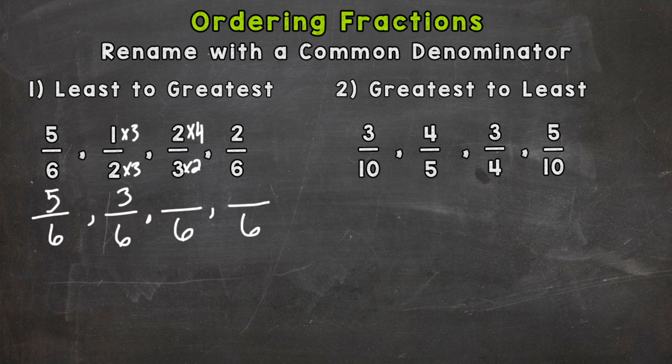So 2 times, oh I'm sorry, I did 3 times 2. So I need to do 2 times 2 would give me 4. And then the last one is already out of 6. 2 sixths is 2 sixths. You do not need to rename.